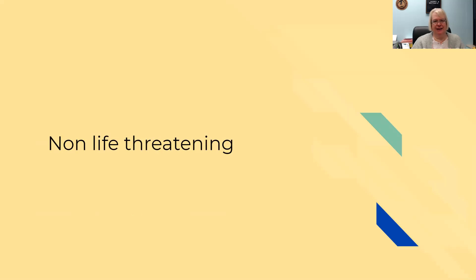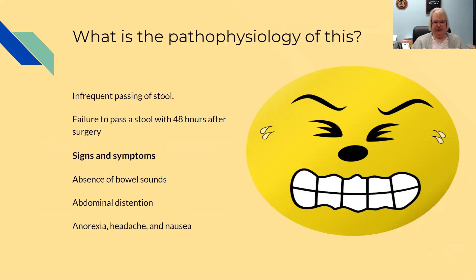Non-life-threatening post-op complications: constipation is one of the most common ones seen after surgery. It is infrequent or failure to pass stool within 48 hours after surgery. Signs and symptoms are absence of bowel sounds, abdominal distension, anorexia, headache, and nausea. Note the difference from paralytic ileus: with constipation, stool is present but just not passing — they do have stool there; it's just not coming out.